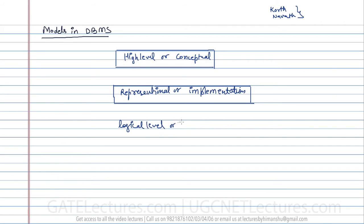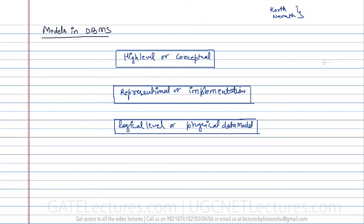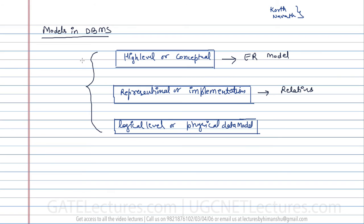The third model is the logical level or physical data model, which deals with the actual physical storage of the data — how the database is stored in memory, or what underlying data structure is being used. In the high-level or conceptual model we discuss ER models and ER diagrams. In the representational or implementational model we mostly discuss relations. And in the logical or physical level we discuss actual physical storage.